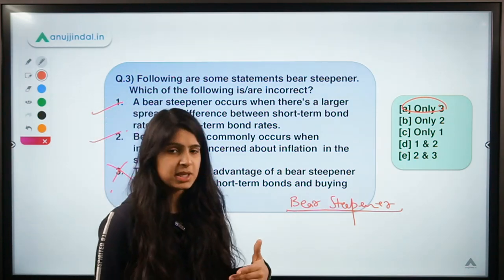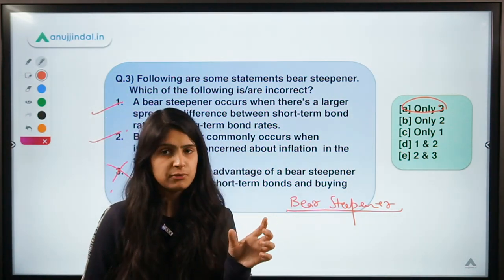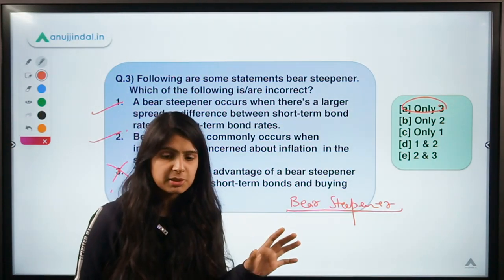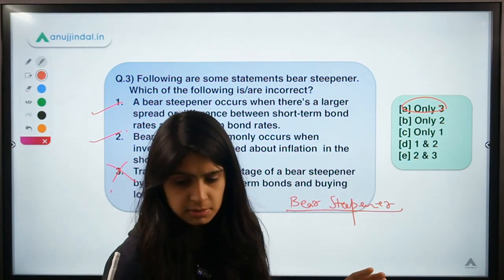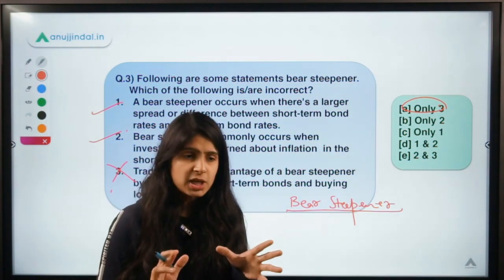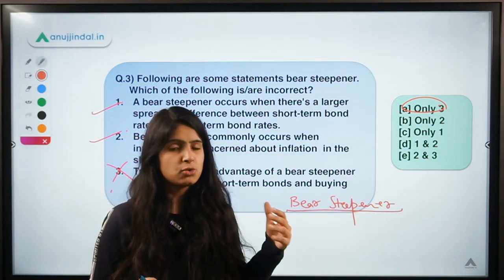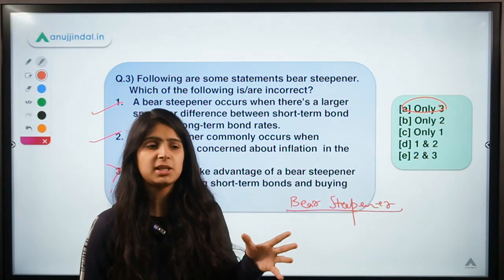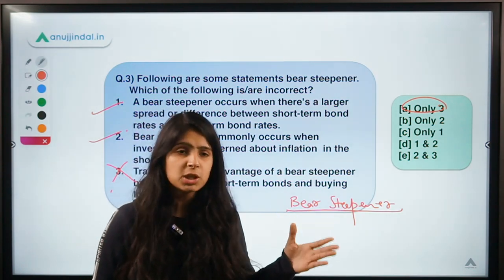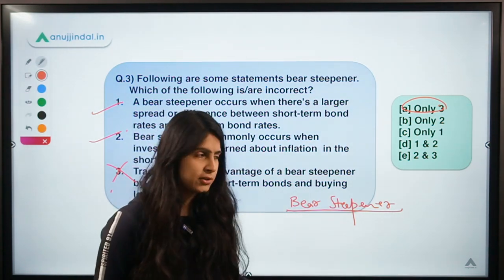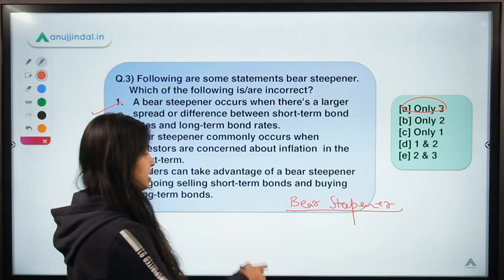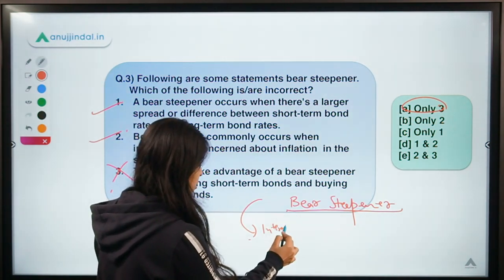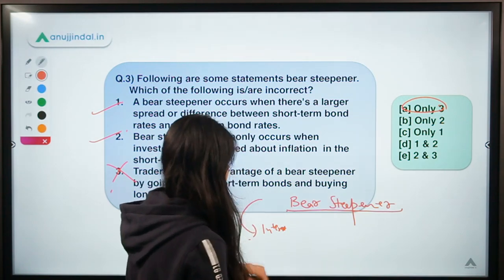First of all, before getting to the statements, we have to learn about this concept called a bear steepener. Whenever we make an investment, we look for the maturity of investment — whether we want to invest for the short term or the long term. You try to decide what maturity you want and accordingly what return is acceptable to you. A bear steepener is a situation where the interest rates of long-term investments behave in a particular way, which we can understand with a graph.